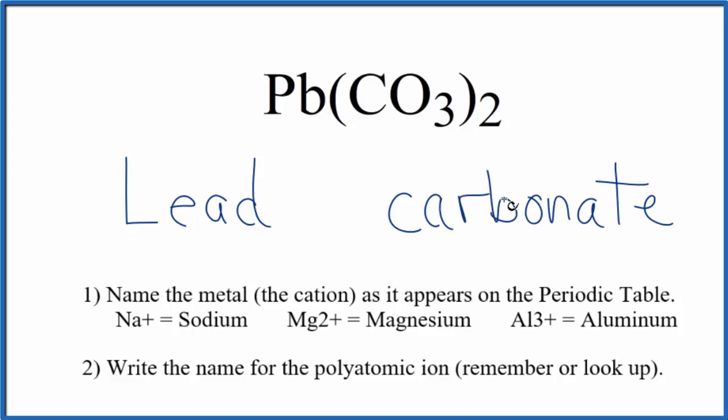So, at this point, we have lead carbonate is the name for Pb(CO₃)₂. We said that lead's a transition metal. Because of that, we don't know the ionic charge on lead. This is an ionic compound because we have a metal and then these nonmetals here in the polyatomic ion.